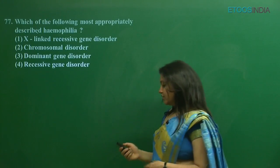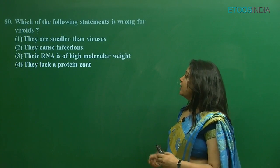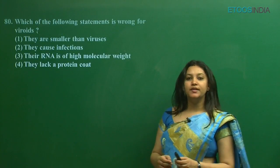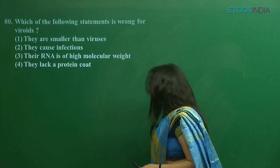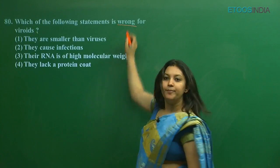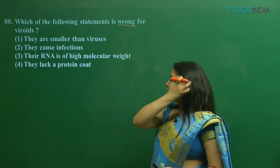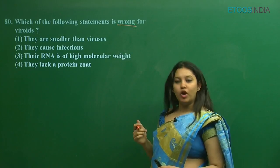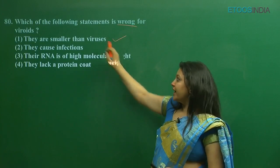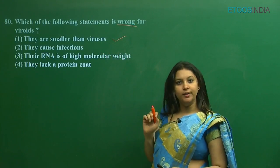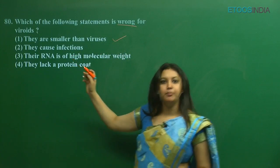The next question is: which of the following statements is wrong for viroids? Among these, which one is incorrect? The first option is: they are smaller than a virus — this is a correct statement; viroids are smaller than viruses. The next is: they cause infection — this is also correct.